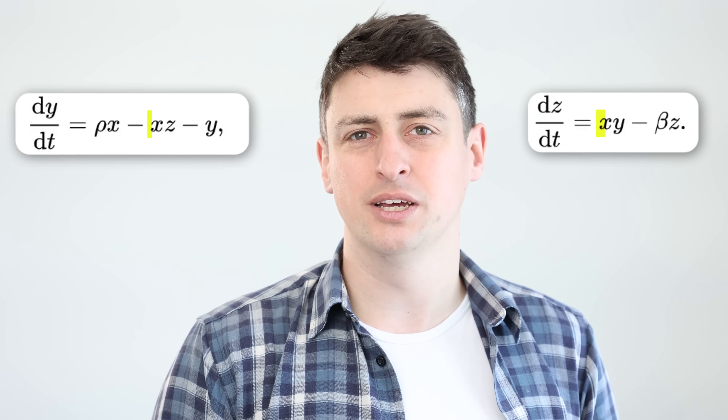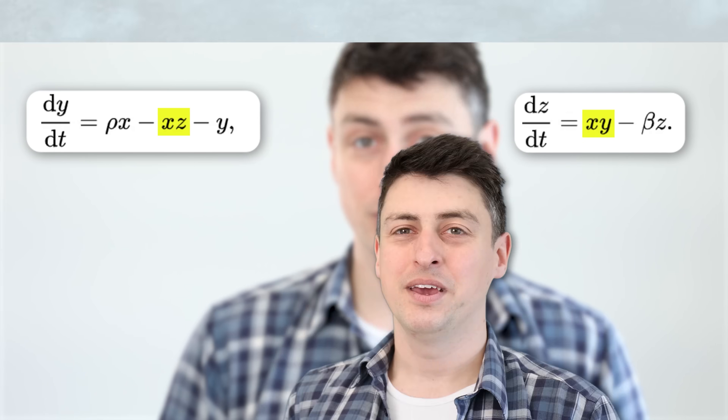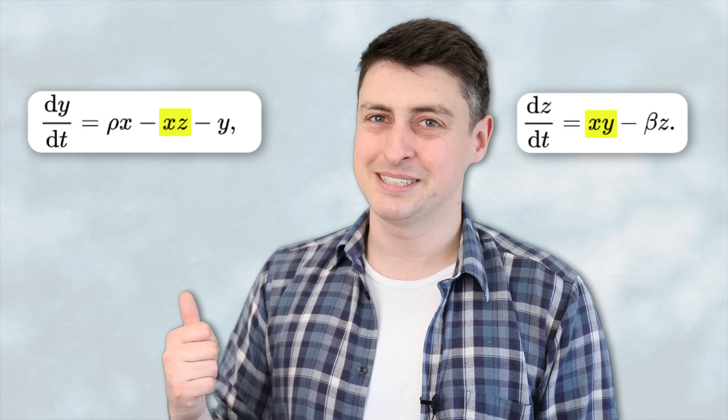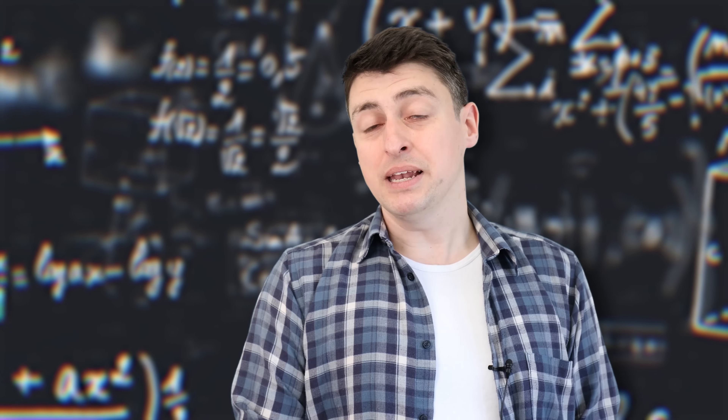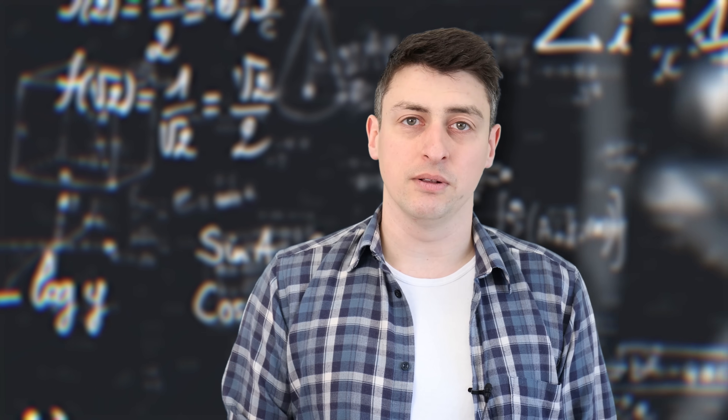There are two books I would like to recommend, but before I do that, I just want to point out that all of the interesting chaotic behavior described in this video comes from just these two terms in the Lorenz equations — the non-linear terms. It may have been a while since you last looked at equations like these. Maybe your eyes are just sliding off them.